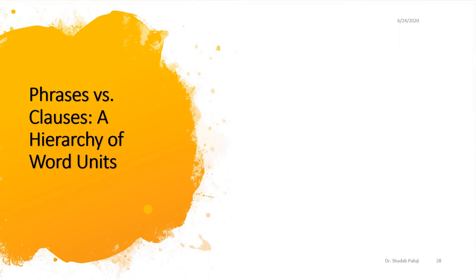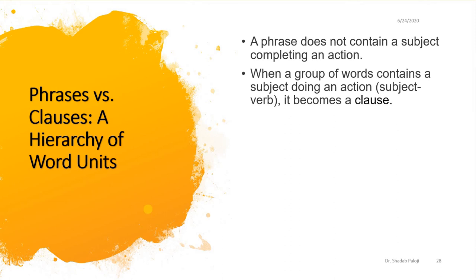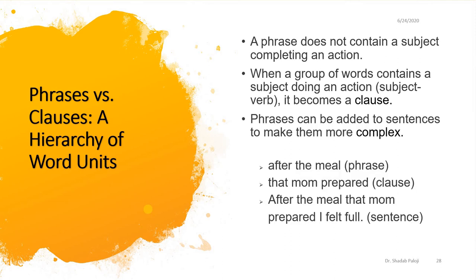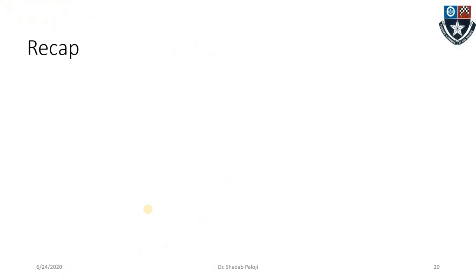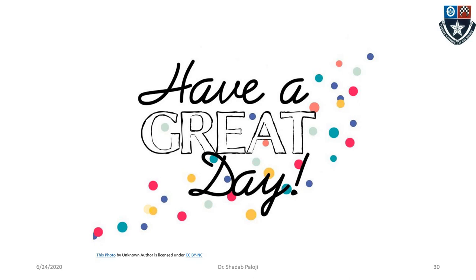A hierarchy of word units: the difference between phrases and clauses is that a phrase will not contain both subject and predicate completing an action, whereas a group of words containing a subject doing an action becomes a clause. Phrases can be added to sentences to make them more complex. For example: 'after the meal' is a phrase; 'that mom prepared' is a clause; together — 'after the meal that mom prepared, I felt full' — this is a complete sentence. The mixture of phrase and clause, or dependent and independent clause, makes a complete statement. This is what we learned today: sentences, kinds of sentences, their structure, phrases and clauses, and the types of phrases. Thank you and have a great day.